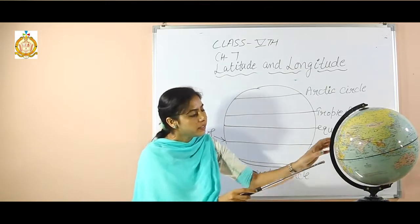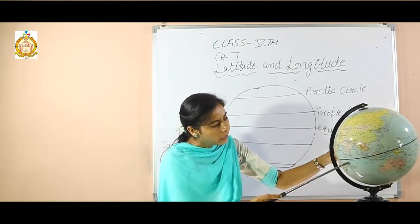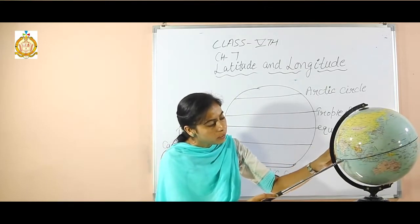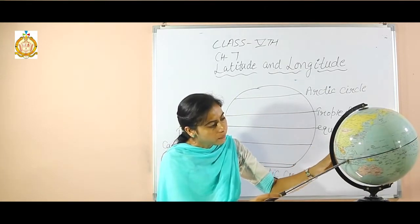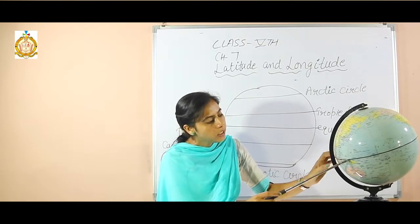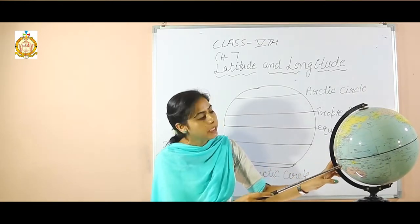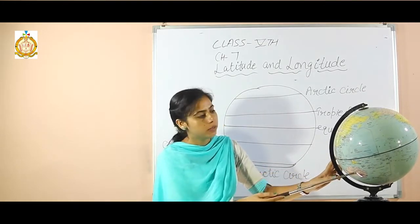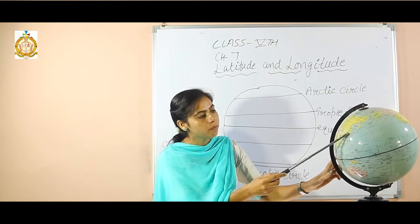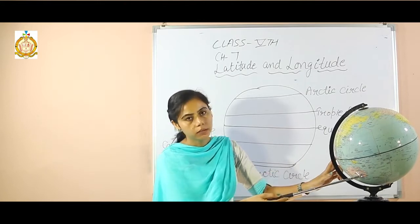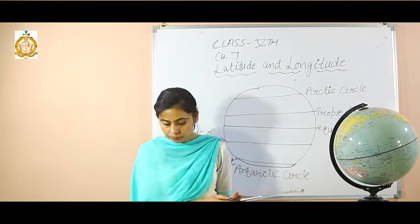There is an imaginary line — the blue color line you can see. It is at the center of earth and it divides the earth into two parts: the northern hemisphere and the southern hemisphere.